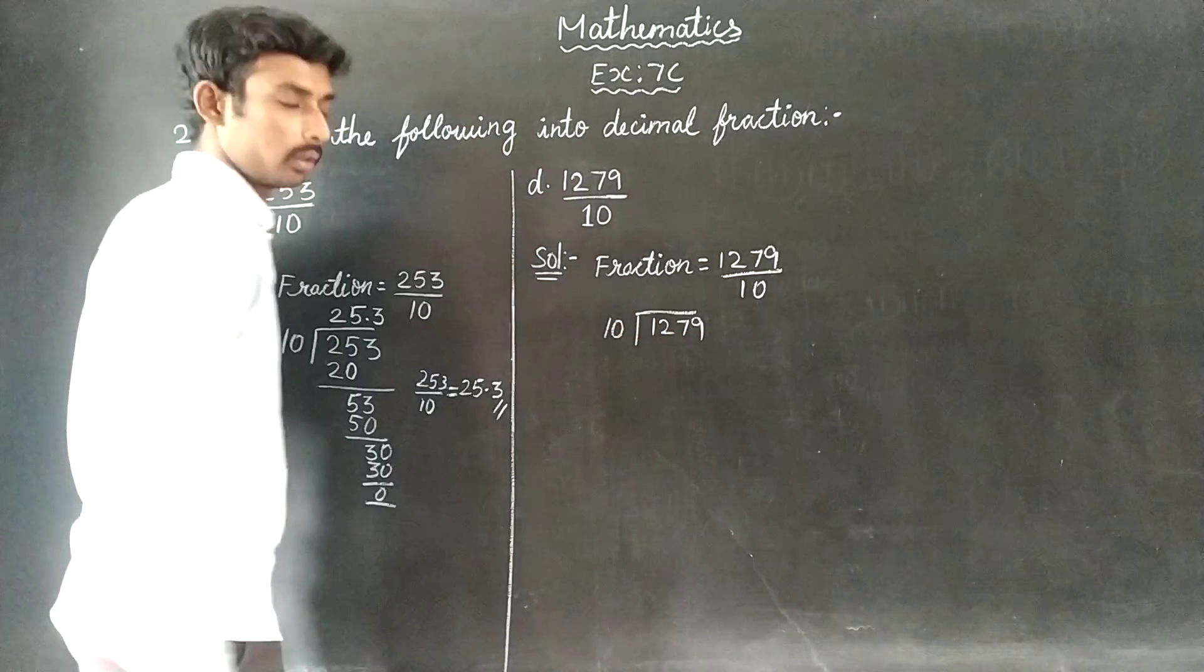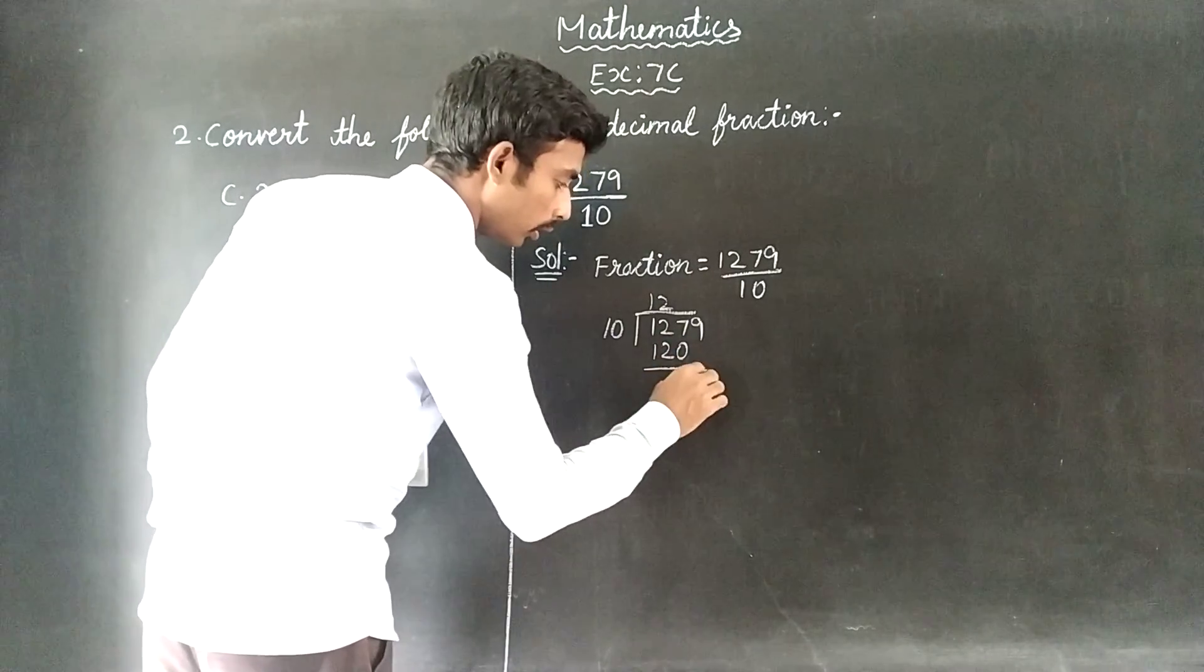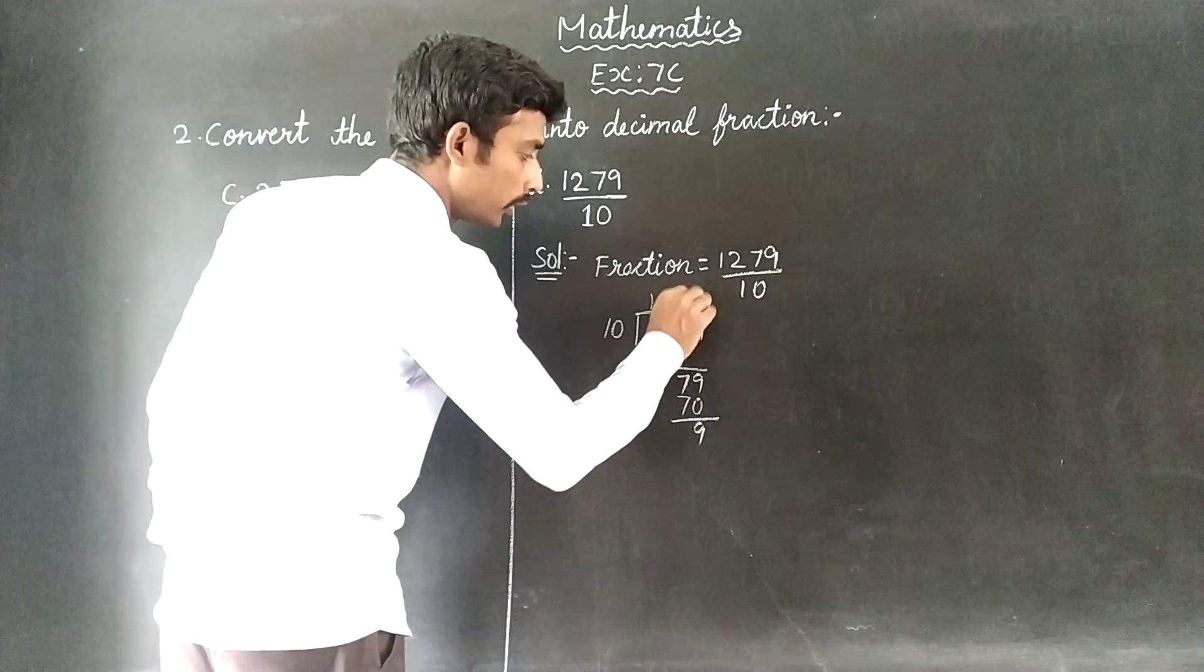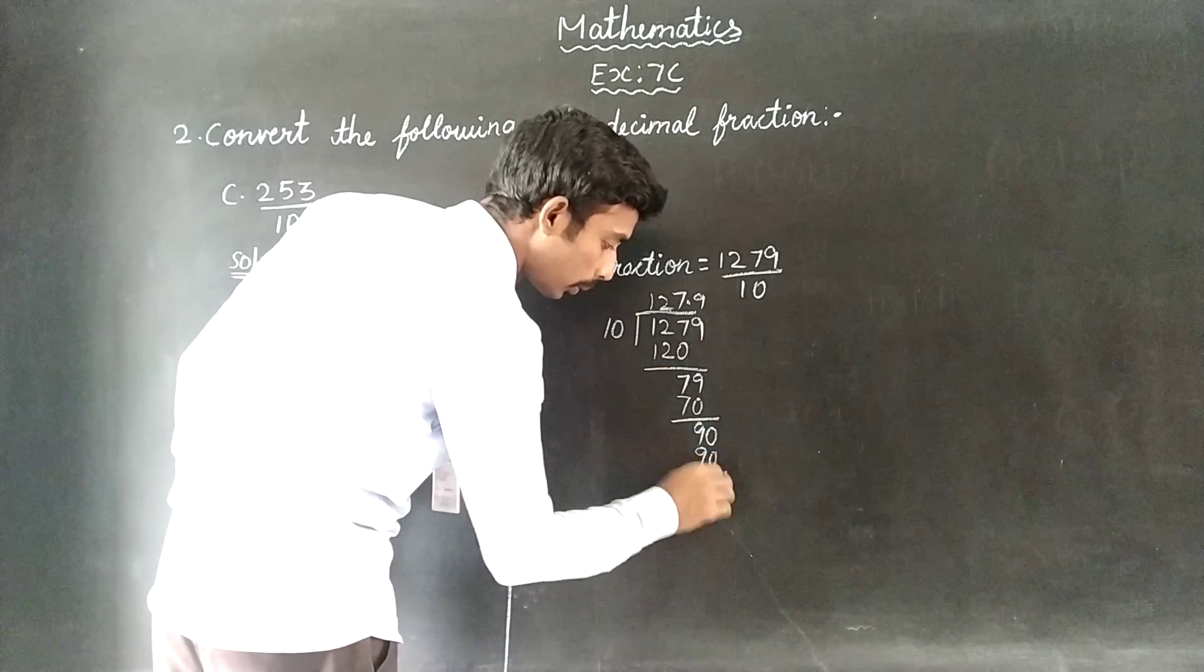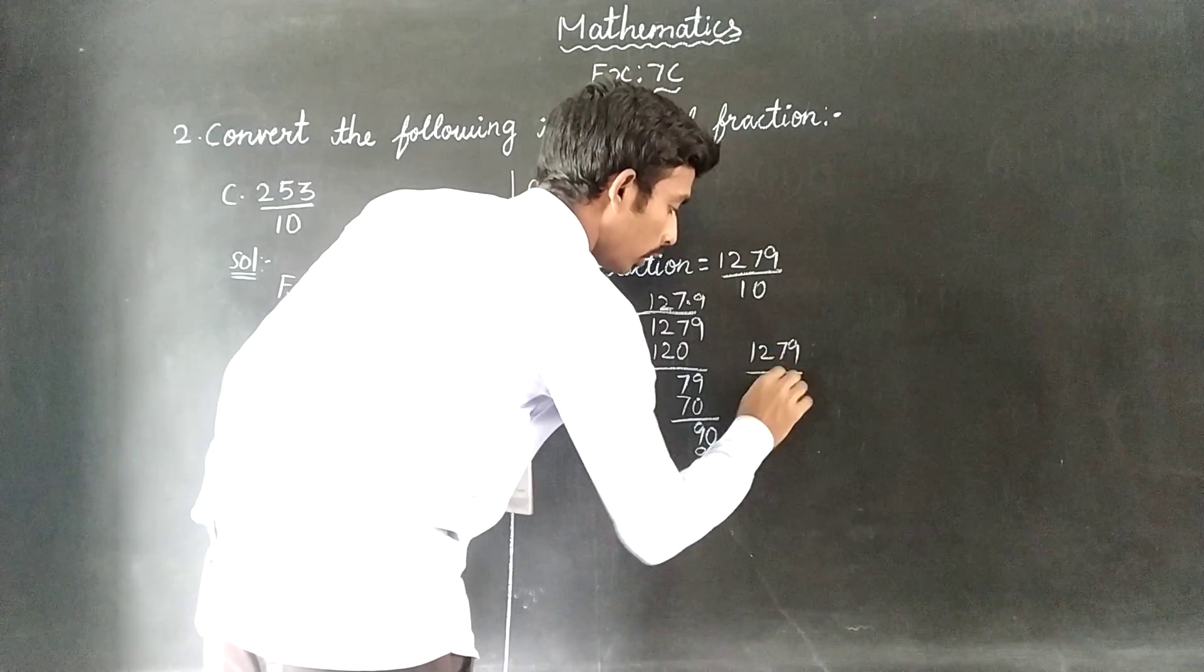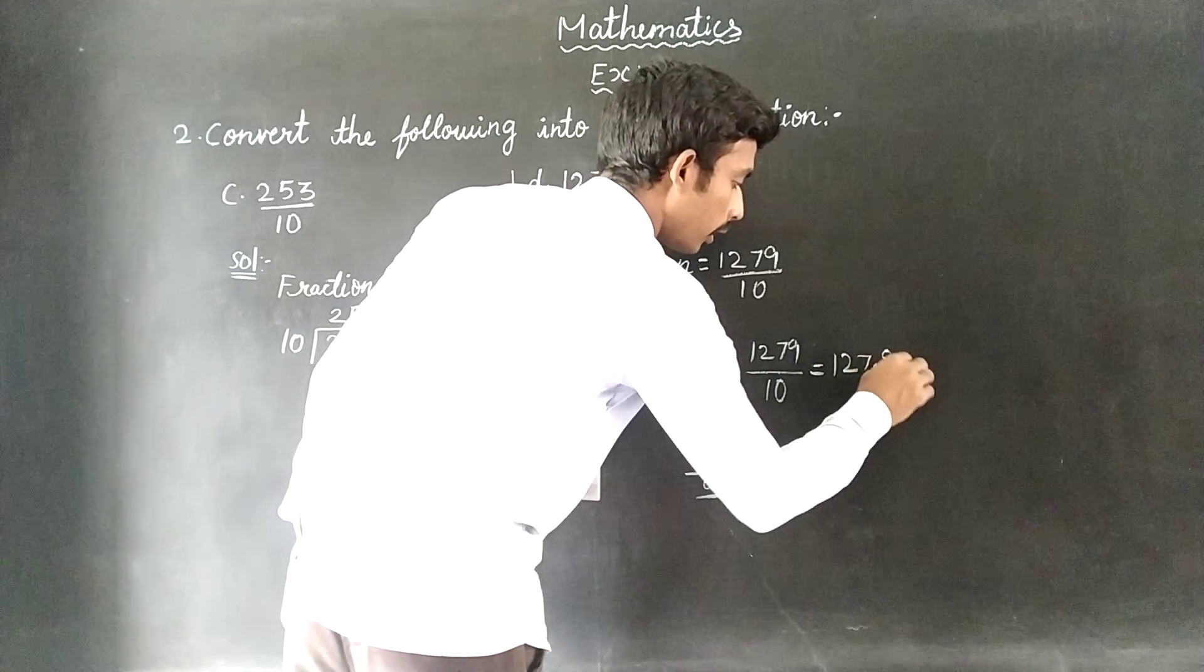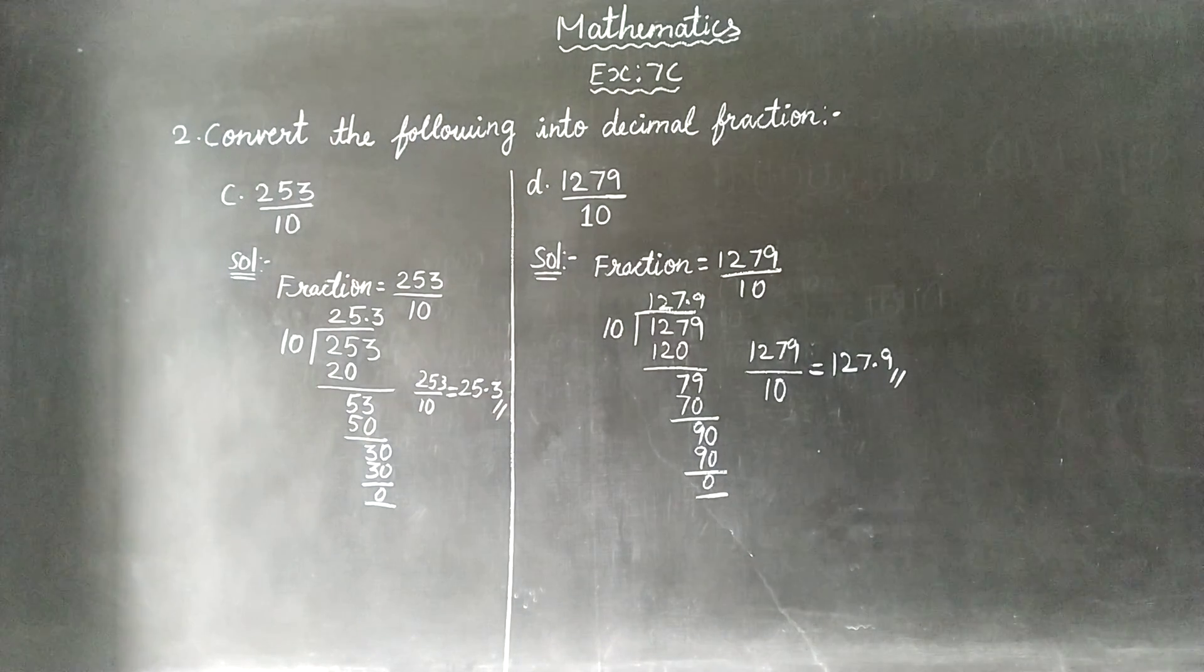147, 10 goes into 130, remainder 9. 10 goes into 70, remainder 9. So 5 equals 0. 10 goes into 90 minus 0. So far, 1279 by 10 in decimal fraction, this is 127.9. This is the answer, 1279 by 10. This is the answer.